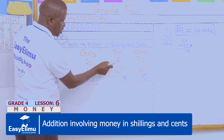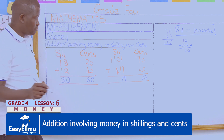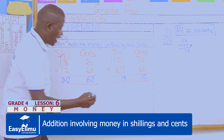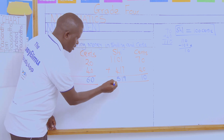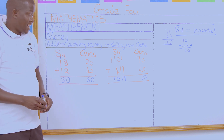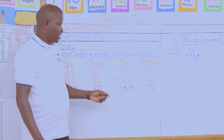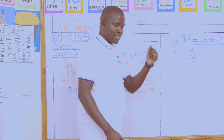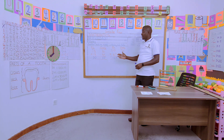We come to the other side: 0 plus 1 is 1. Remember, we are working as a group. Then 1 plus 4 gives 5, and the last one is 1 plus 0 gives 1. And that becomes our answer: 1,519 shillings and 10 cents. That becomes our answer, and this is how we add money involving shillings and cents.